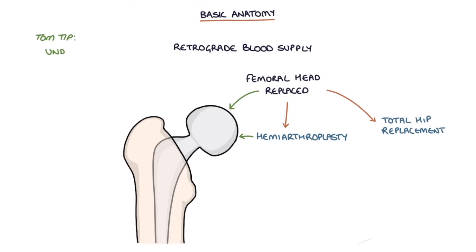A top tip: it's worth understanding and remembering the concept of the retrograde blood supply to the head of the femur and how this determines the choice of operation. When I did an FY1 job in trauma and orthopaedics, the juniors were questioned on this concept almost every time a patient came in with a hip fracture. Being able to identify the type of hip fracture on an x-ray — whether intracapsular or extracapsular — and justify the choice of operation made trauma meetings much less stressful.